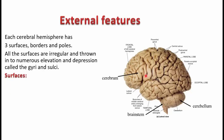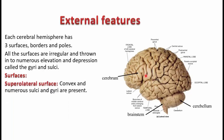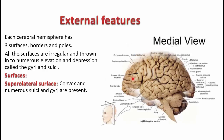Mainly three surfaces: one is the superolateral or simply the lateral surface, then you have the medial surface, and then you have the inferior surface. The superolateral surface is wide — you are able to see a very wide area. It is made up of numerous gyri and sulci and it is convex, somewhat bulging outwards.